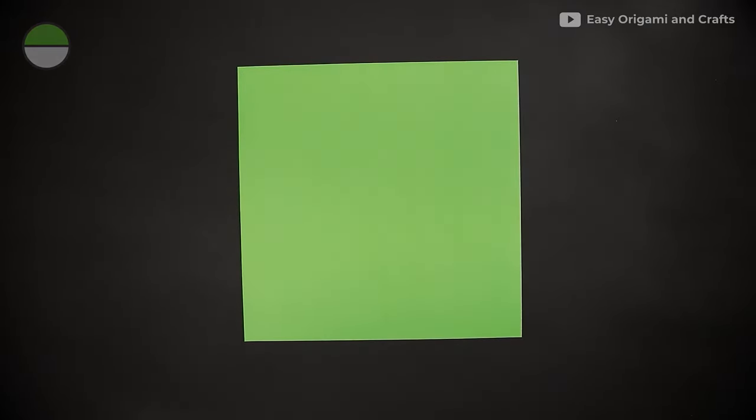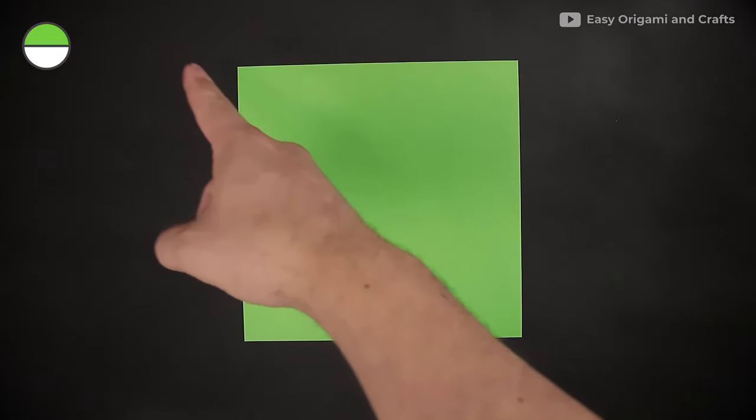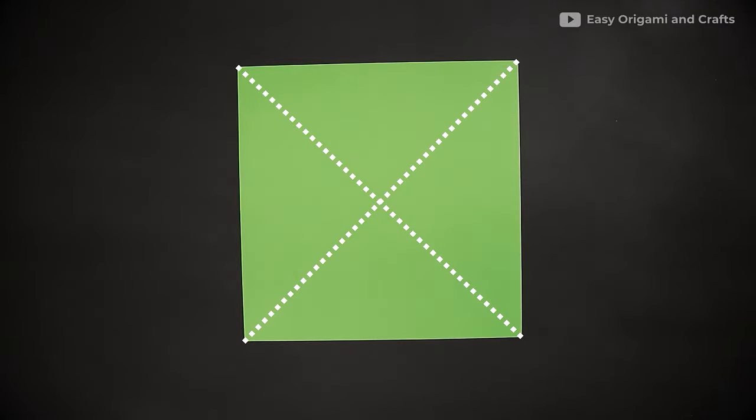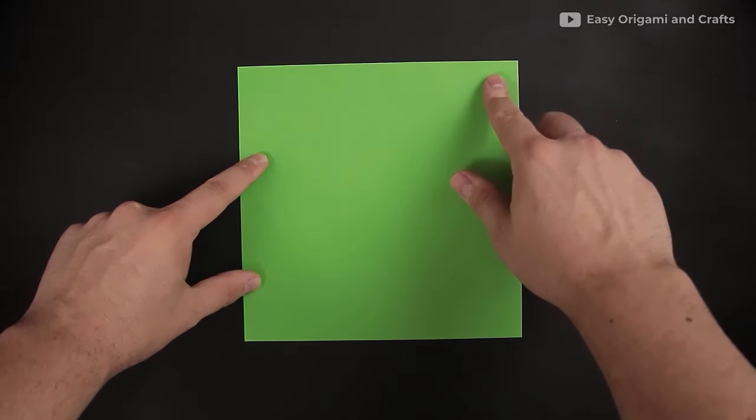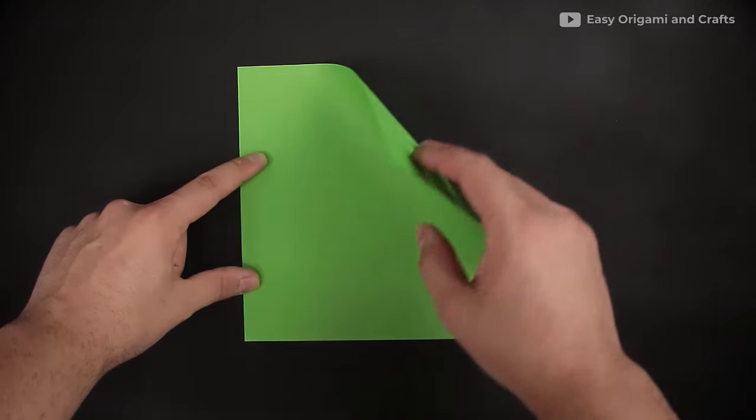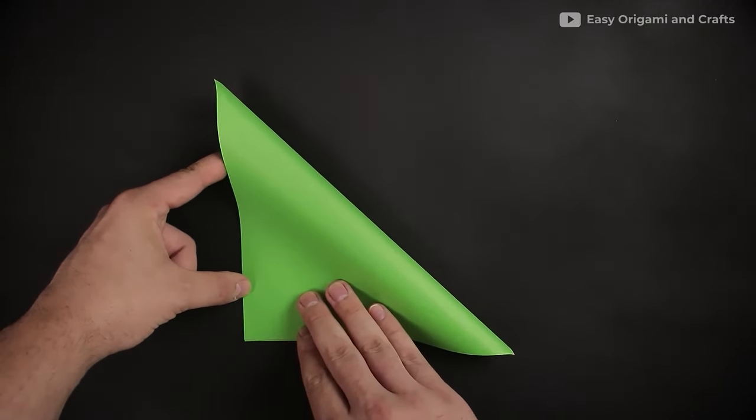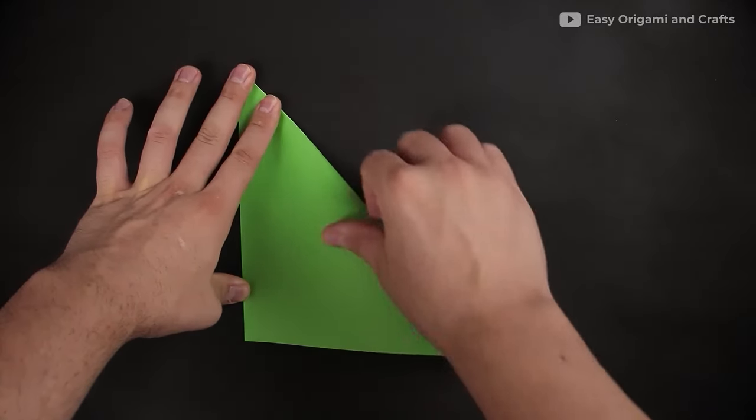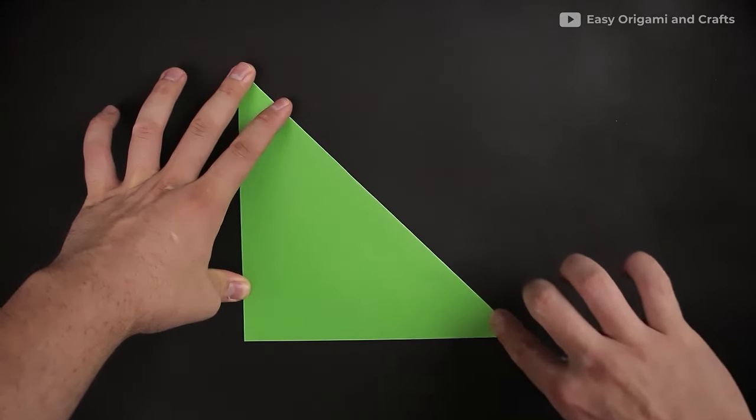As our first step, we are going to fold the paper in half along both diagonals, making something like an X. For that, we have to bring one corner to the other, like this, and crease sharply.